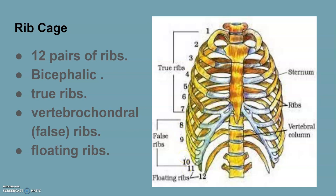The eighth, ninth, and tenth pairs of ribs do not directly connect to the sternum; instead they join the seventh rib with the help of hyaline cartilage. These are called false ribs, or vertebrochondral ribs. The last two pairs — the 11th and 12th ribs — are not connected ventrally and are therefore called floating ribs. Together, these bones form the rib cage, classified into true ribs, false ribs, and floating ribs.